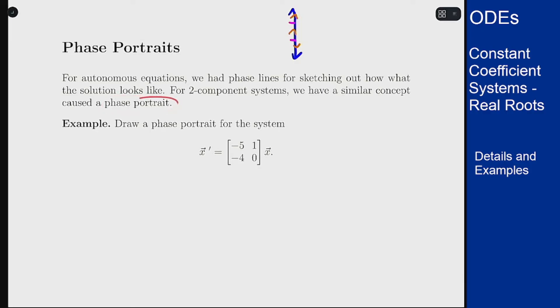Basically we're going to do the same idea as the phase line but we now have two components here, an xy plane instead of a single axis. Autonomous equations only had one variable, the function we're solving for, so we had a one-dimensional phase line.